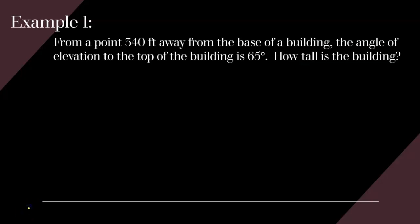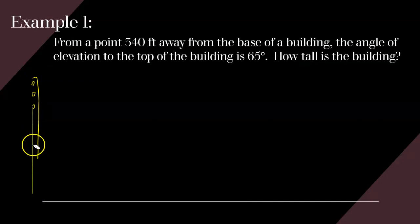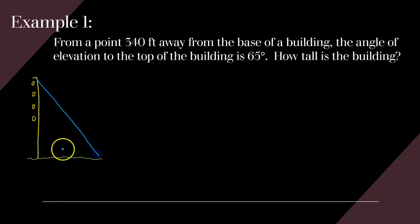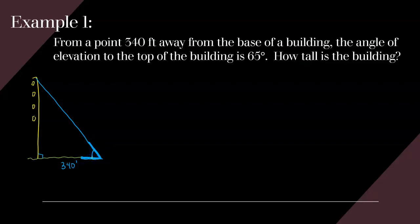So let's draw a building. From a point 340 feet away from the base of a building, this is our triangle, and this distance down here is 340 feet. The angle of elevation to the top of the building is 65 degrees — that's the angle formed when someone at the ground looks up at the top of the building. So that's 65 degrees. And we're trying to find the height X of the building.